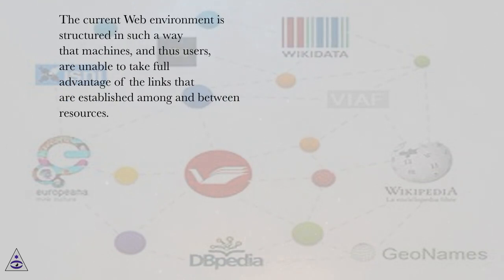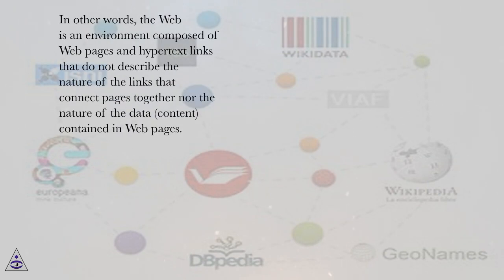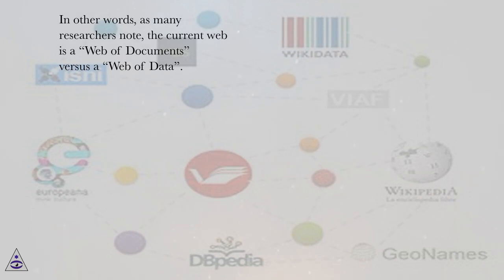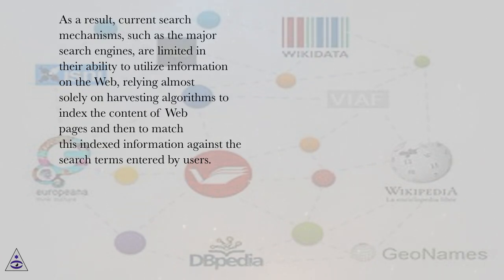The current web environment is structured in such a way that machines, and thus users, are unable to take full advantage of the links that are established among and between resources. In other words, the web is an environment composed of web pages and hypertext links that do not describe the nature of the links that connect pages together nor the nature of the data contained in web pages. As many researchers note, the current web is a web of documents versus a web of data. As a result, current search mechanisms, such as the major search engines, are limited in their ability to utilize information on the web, relying almost solely on harvesting algorithms to index the content of web pages and then to match this indexed information against the search terms entered by users.